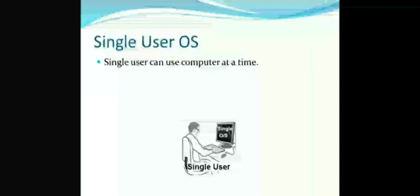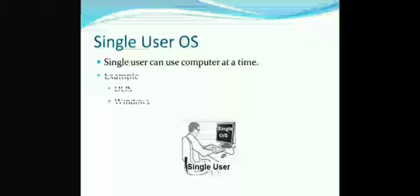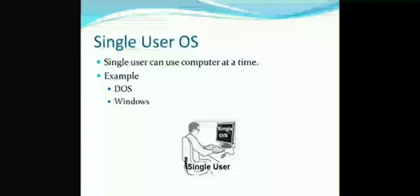Only one user can use it at one time. For example, DOS is a single user operating system. Windows is also a single user operating system — only one person or one student can use it at a time.